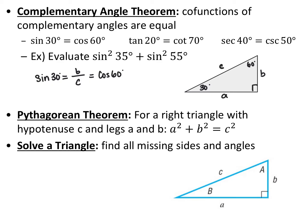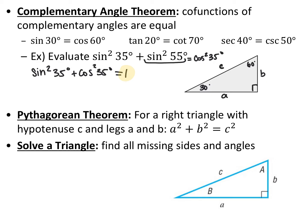For example, if we want to evaluate sine squared of 35 degrees plus sine squared of 55 degrees, we can use the complementary angle theorem. Since 35 and 55 are complementary angles, sine squared of 55 degrees is equivalent to cosine squared of 35 degrees. So we end up with sine squared of 35 degrees plus cosine squared of 35 degrees, which by the Pythagorean identity equals 1.